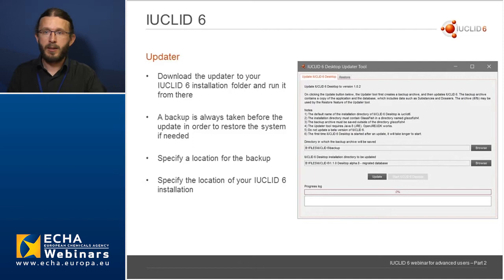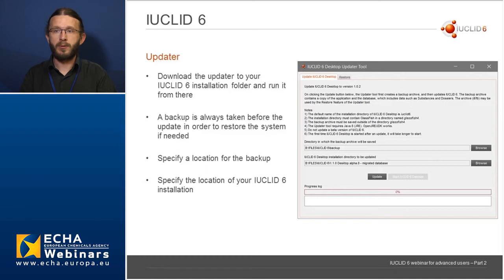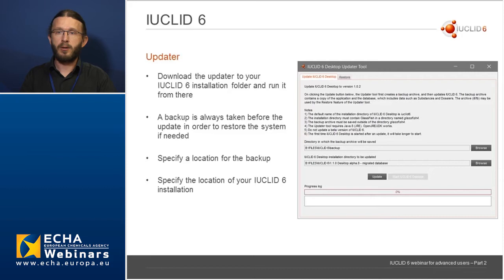During the update process, a backup is always taken before the update can take place. This updater includes a backup and restore tool that saves a copy of your database and your IUCLID 6 installation as it was before the update. In case there is a problem during the upgrade process, you can always come back to the previous version. The tool will guide you through the upgrade process and you will have to specify the location for the backup and the location of your IUCLID 6 installation folder if it's not detected automatically.